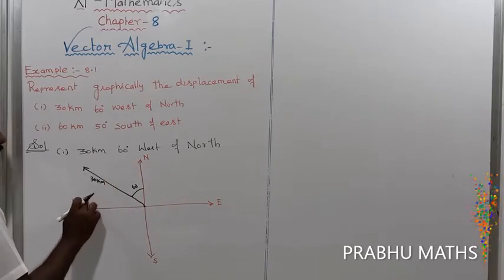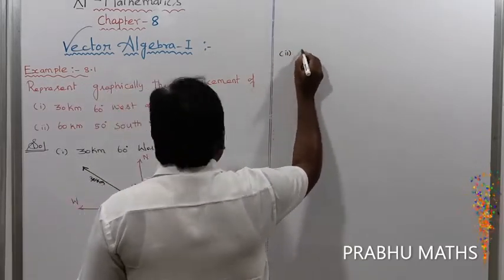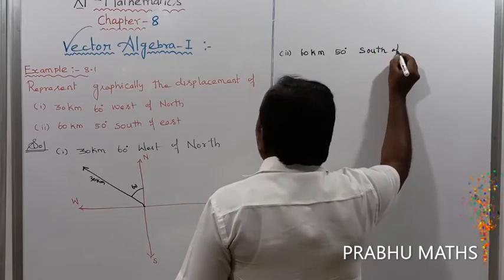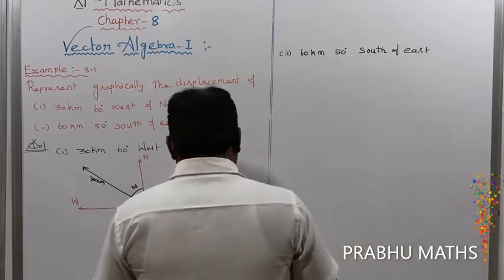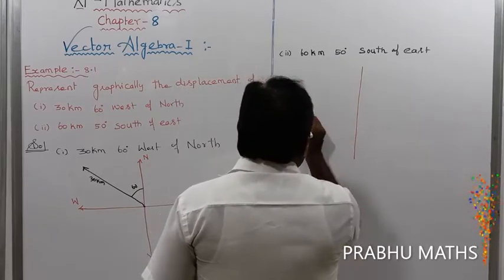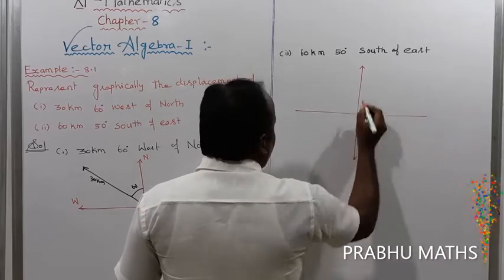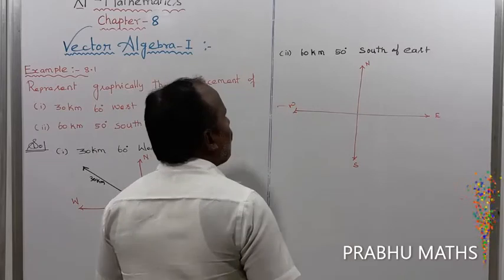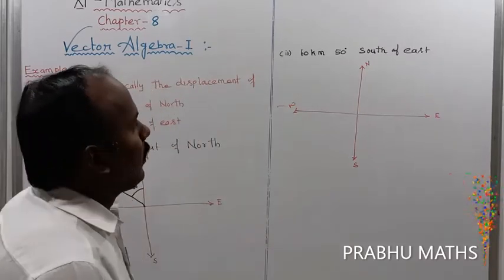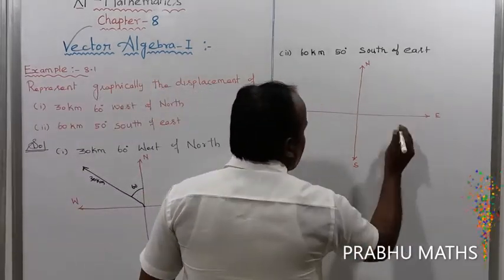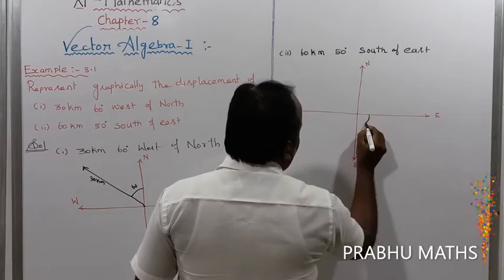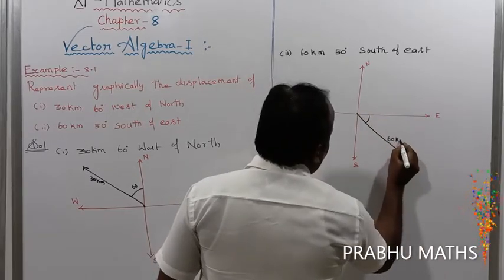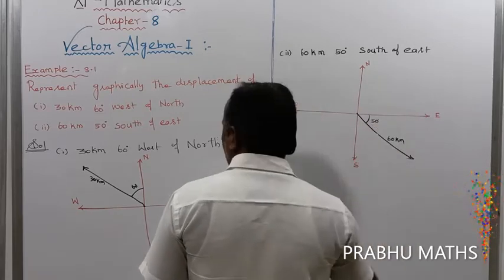Next, the second displacement: 60 km, 50 degrees south of east. On the graph sheet, north is up, south is down, east is right, west is left. So south of east means from east toward south, 50 degrees. That angle is 50 degrees, and the distance is 60 km.